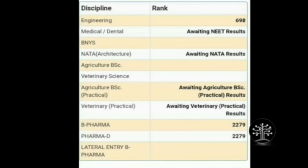For example, if you want to go into engineering, agriculture, medical, dental, architecture, B.Pharma, or Pharma-D — each specific field has a separate rank. If you want a specific rank, KCET will provide a specific rank for that course. Each and every category — architecture, agriculture, engineering, medical, dental, etc. — has a separate rank.